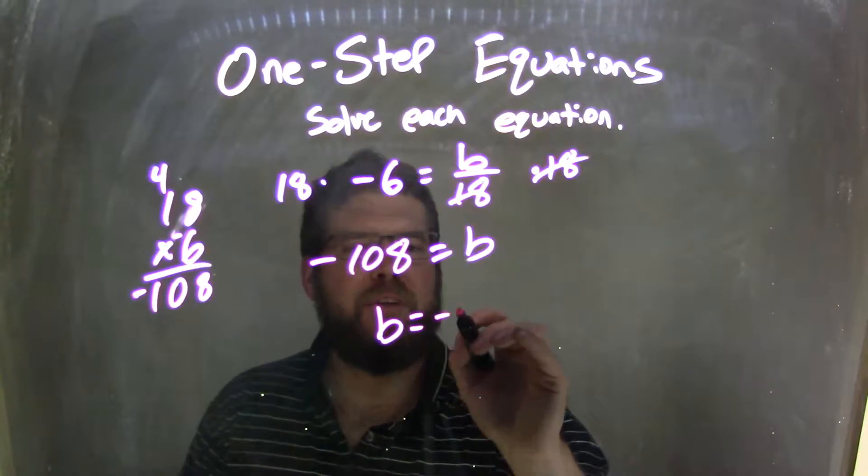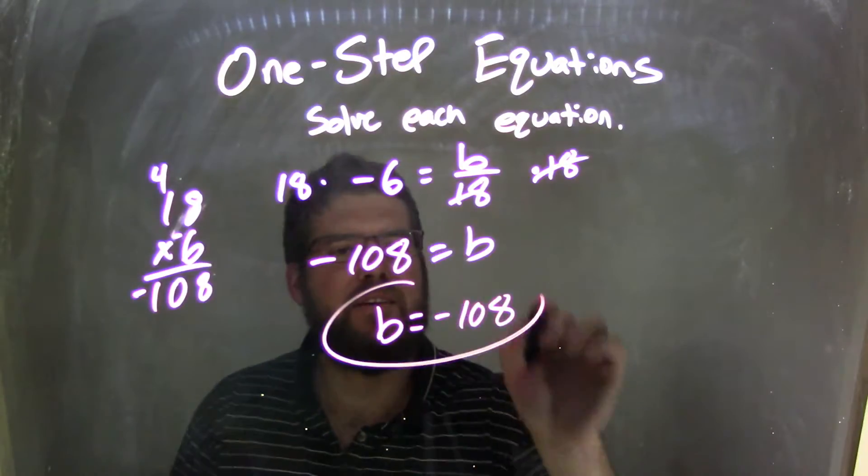Well, let's rewrite it nicely. B first, b equals negative 108, and that is our final answer.